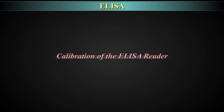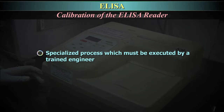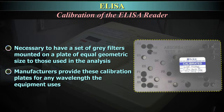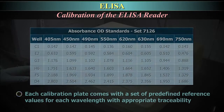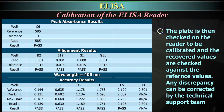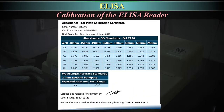Calibration of the ELISA reader. The calibration of a microplate reader is a specialized process which must be executed by a trained engineer. In order to do the calibration, it is necessary to have a set of grey filters mounted on a plate of equal geometric size to those used in the analysis. Manufacturers provide these calibration plates for any wavelength the equipment uses. Each calibration plate comes with a set of predefined reference values for each wavelength with appropriate traceability. The plate is then checked on the reader to be calibrated and the recovered values are checked against the reference values. Any discrepancy can be corrected by the technical support team. It is essential to get a certificate of calibration, which will also show the next due calibration date.